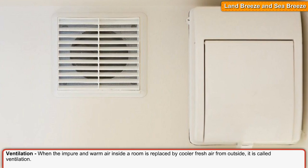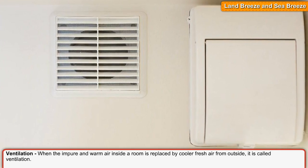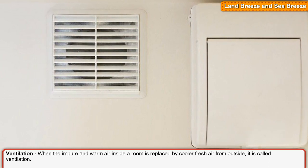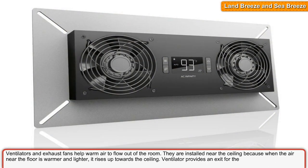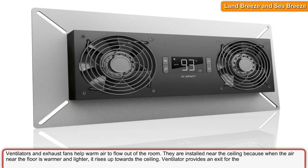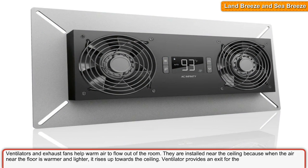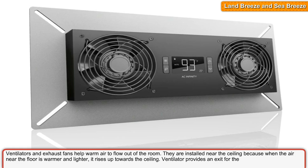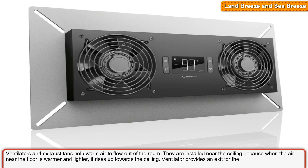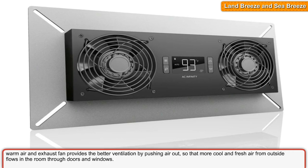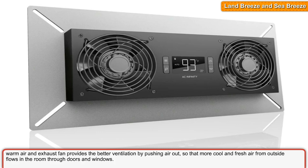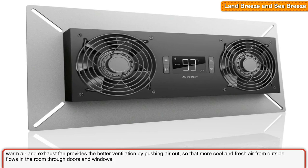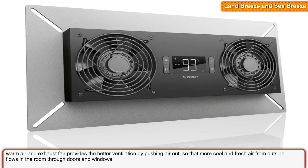Ventilation. When the impure and warm air inside a room is replaced by cooler fresh air from outside, it is called ventilation. Ventilators and exhaust fans help warm air to flow out of the room. They are installed near the ceiling because warm air rises up towards the ceiling. An exhaust fan provides better ventilation by pushing air out so that more cool and fresh air from outside flows into the room through doors and windows.